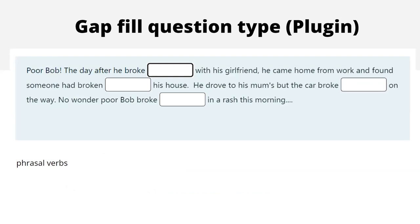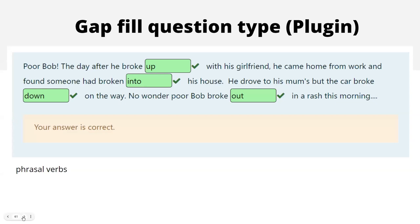Remember poor Bob — who broke up with his girlfriend, whose car broke down, and whose house was broken into? Those phrasal verbs we looked at from a reading perspective can also be used for writing. With the Gap Fill question type plugin, you can use it either where students see the prepositions and drag and drop them in, or where they have to actually write them down. You can use it both for reading or for writing, and you choose the text and the level of complexity of the language. They got them all right — very good at phrasal verbs!